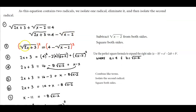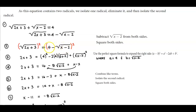We want to get rid of the radical on the left side. In order to do that, we're going to square both sides. On the right side we're squaring 4 minus the square root of x minus 2. Since we're squaring a binomial, we need to use the perfect square formula to expand the right side.